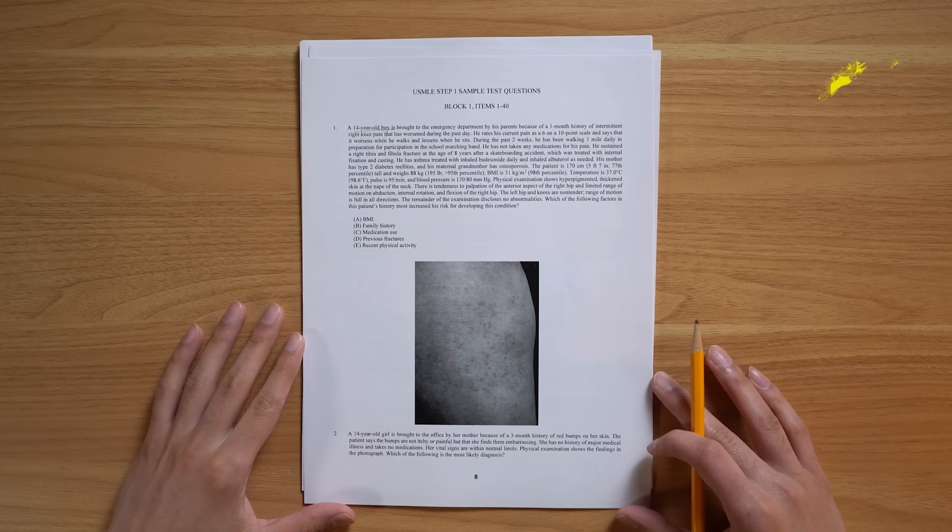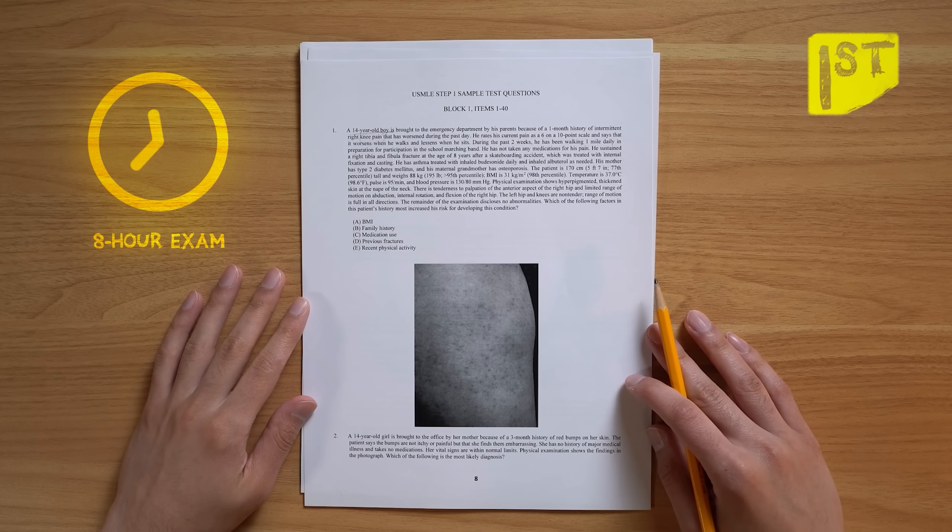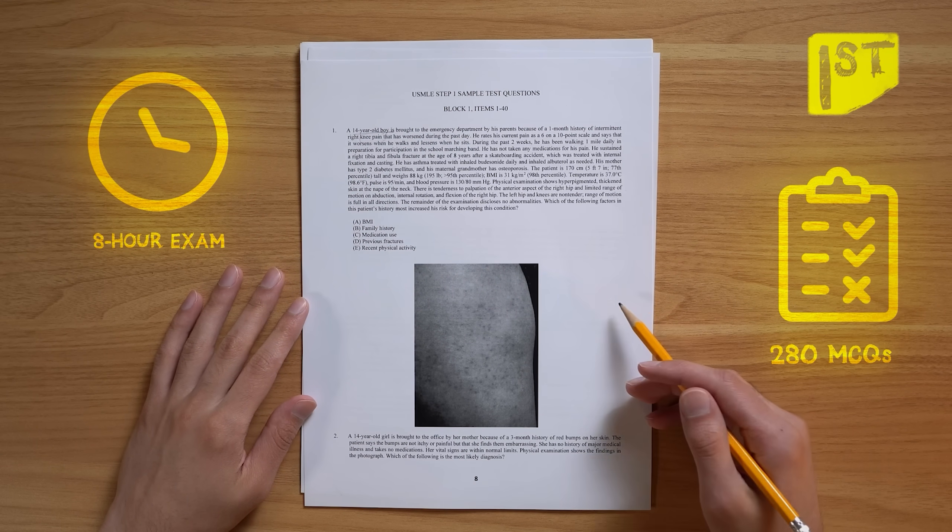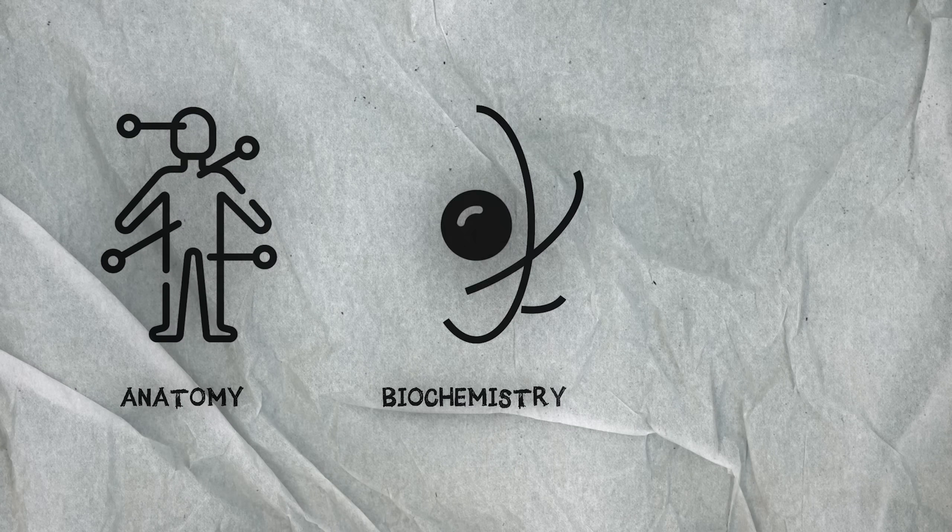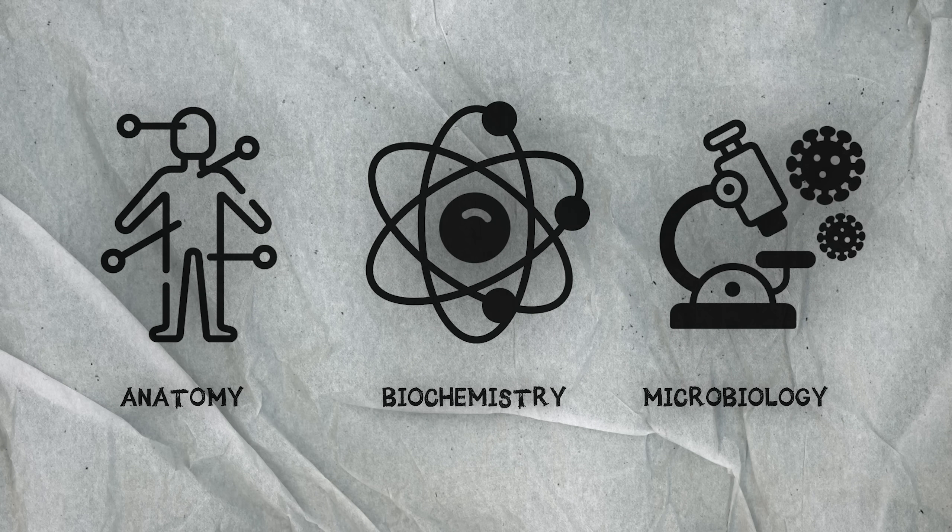Each of these steps is a very intense and lengthy exam. Step one is an eight-hour exam that consists of 280 multiple choice questions covering topics like anatomy, biochemistry, microbiology, and many other areas. If you're in high school, I want you to simply imagine spending the entire school day taking the most intense exam of your life.